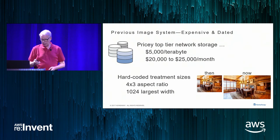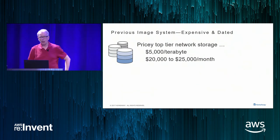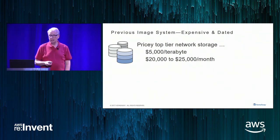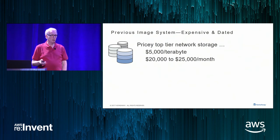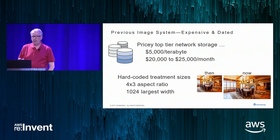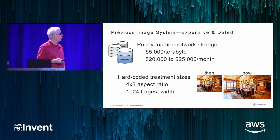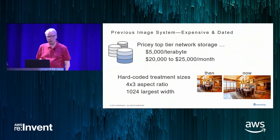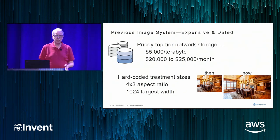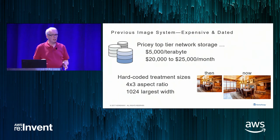In our Austin data center, all of these images are stored on a NAS — network attached storage. It's expensive storage, running about $5,000 a terabyte fully loaded cost. So just on this storage space alone, we're running about $25,000 a month. Most of the images on our website are four-by-three aspect ratio because 10 years ago we all had CRT monitors, not 1920 LCD panels.